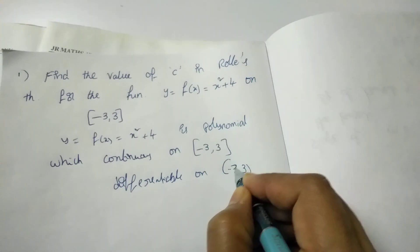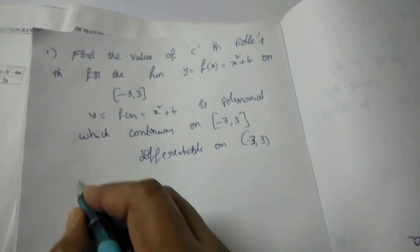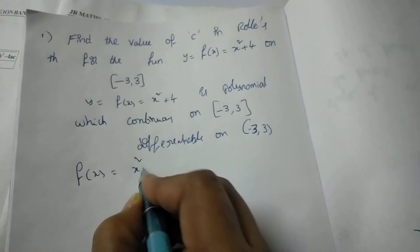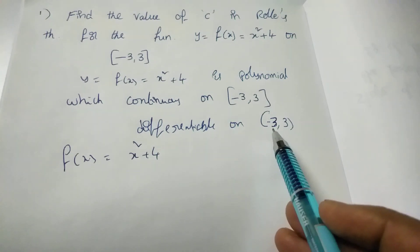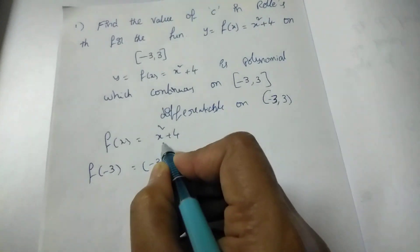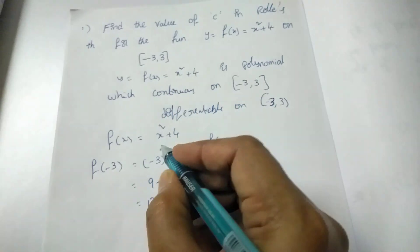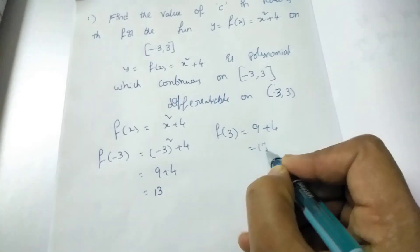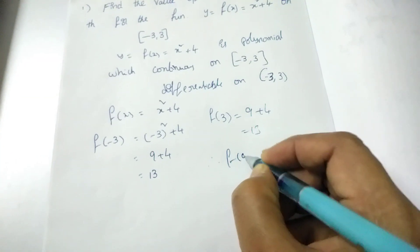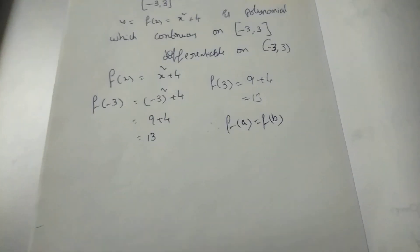Next, check f(a) = f(b). Here a = −3 and b = 3. f(−3) = (−3)² + 4 = 9 + 4 = 13. f(3) = 3² + 4 = 9 + 4 = 13. Therefore f(a) = f(b).